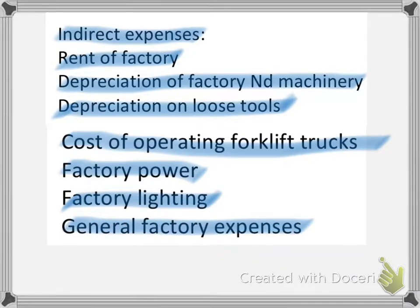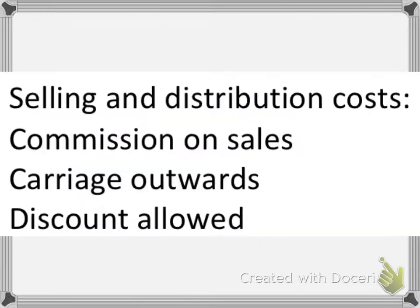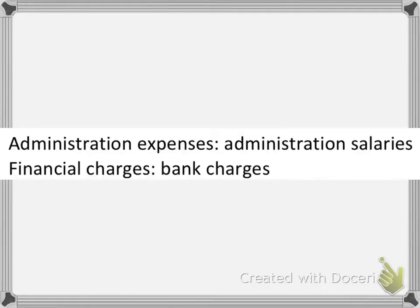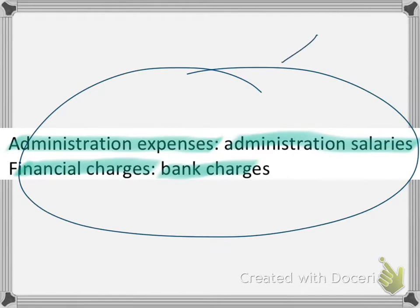It's really important to learn what comes under each category — what comes under direct expenses and what comes under indirect expenses. Selling and distribution costs — which include commission on sales, carriage outwards, and discount allowed — are not supposed to be taken in a manufacturing account. Similarly, administration expenses such as administration salaries, and financial charges such as bank charges, are also not included in a manufacturing account.